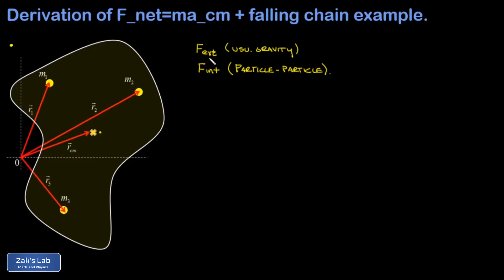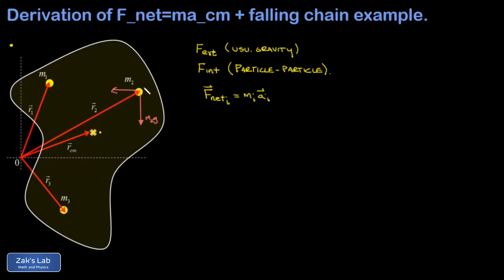Next we're going to apply Newton's second law to every single particle: the net force on the ith particle equals the mass of the ith particle times its acceleration. To illustrate, if I grab particle number two, it might have the force of gravity pulling down on it, but it might also have interaction forces with its nearest neighbors - these are all internal forces binding that particle into place.